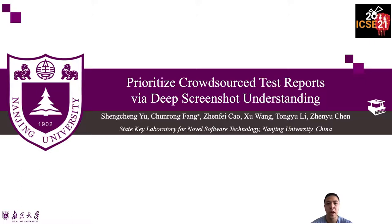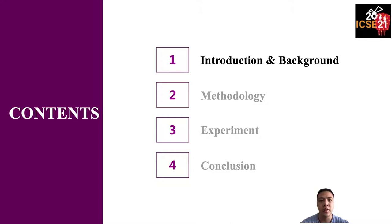Hi everyone, I am Shen Cheng Yu from Nanjing University. It is my great honor to have the chance to present our paper at ICSE 2021. The work is about crowdsourced test report prioritization via deep screenshot understanding. My presentation is divided into four parts: the introduction and background, the methodology in detail, the experiment for the approach evaluation, and the conclusion.